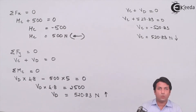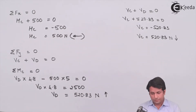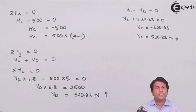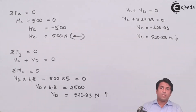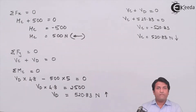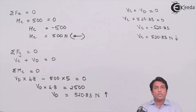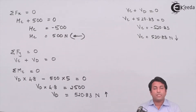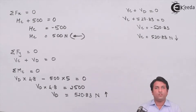I am now done with two steps in solving the truss problem: the first step was the stability criteria and the second step was finding the support reactions. Now the third step is to find the forces in each member using the method of joints.